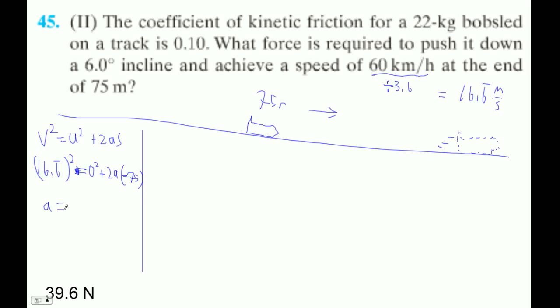Okay, so therefore my acceleration is equal to 16.6 bar divided by 2 divided by negative 75, and I get negative 1.85. And this is a repeating, this is awesome, it goes 1.85, 1.85, 1.85, 1.85.